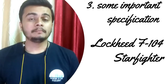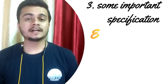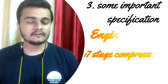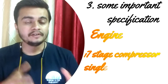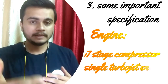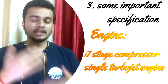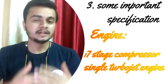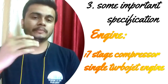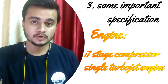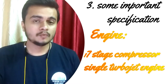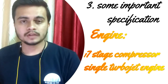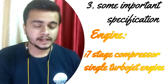F-104 Starfighter के engine की बात करें तो इसमें एक turbo jet engine लगा हुआ था जो 17-stage compressor का था। पूरी aircraft में सिर्फ एक engine लगा हुआ था। 17-stage का मतलब है कि 17 blades line से लगी होती हैं और एक के बाद एक blade air को compress करती जाती है। 17 compressions के बाद जो output निकलता है वो air बहुत ज़्यादा compressed हो जाती है, जिससे performance better हो जाता है।